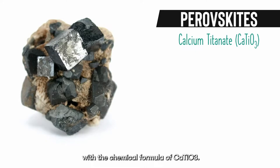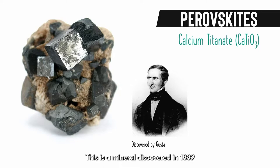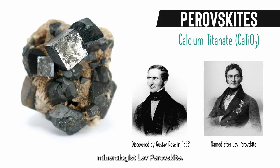Perovskite is a calcium titanate with the chemical formula CaTiO3. This is a mineral discovered in 1839 by a German mineralogist called Gustav Rohs. He named this material perovskite after the Russian mineralogist Lev Perovski.